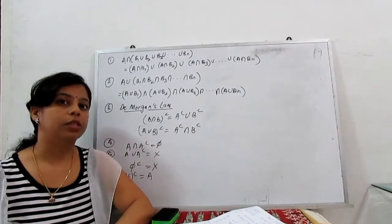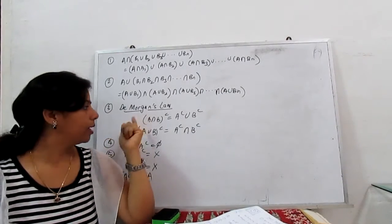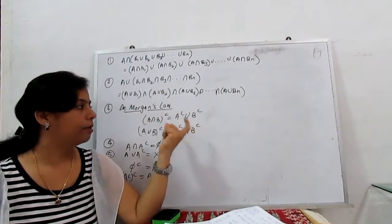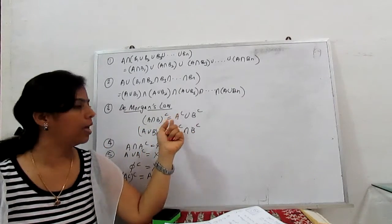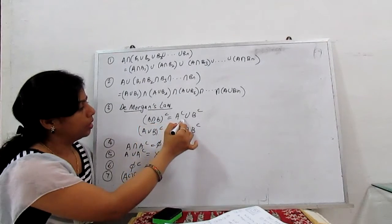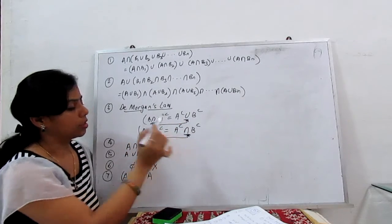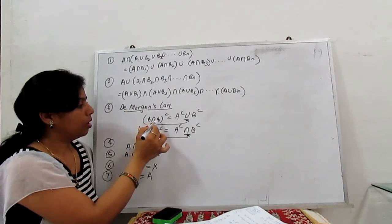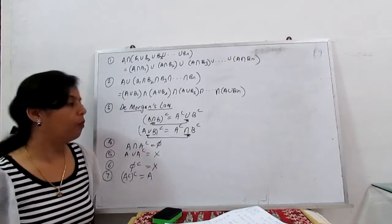Next, a very important law called De Morgan's Law. De Morgan's laws are basically for complements. First law: (A intersection B) complement equals A complement union B complement. Second law: (A union B) complement equals A complement intersection B complement. Always remember: if the inside operation is intersection, the outside becomes union, and vice versa. This is a very important law in algebra of sets.